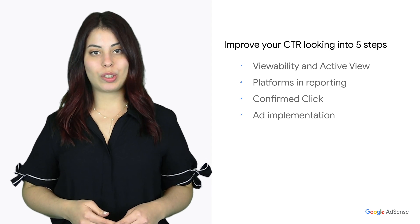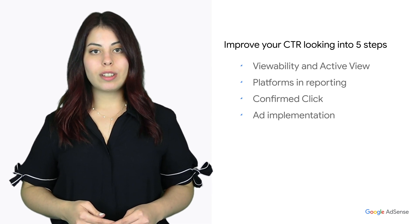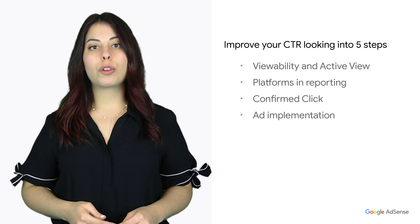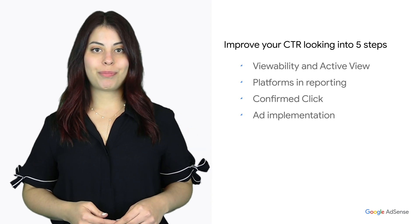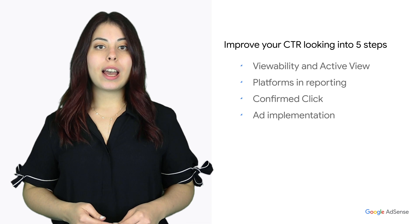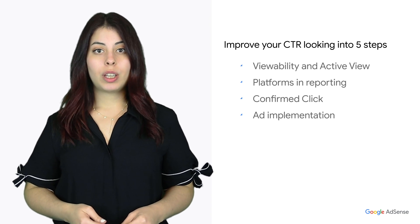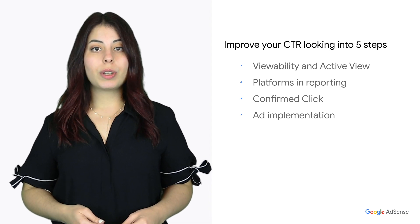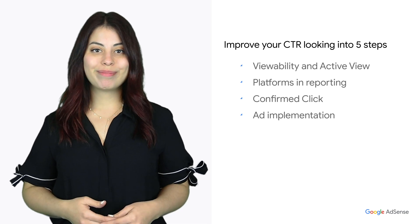Step four: review your ad implementation. Review the recent changes in ad locations for your five top ad units. Also check your ad code, especially if you have modified it, because this will impact your ad serving and therefore your revenue.